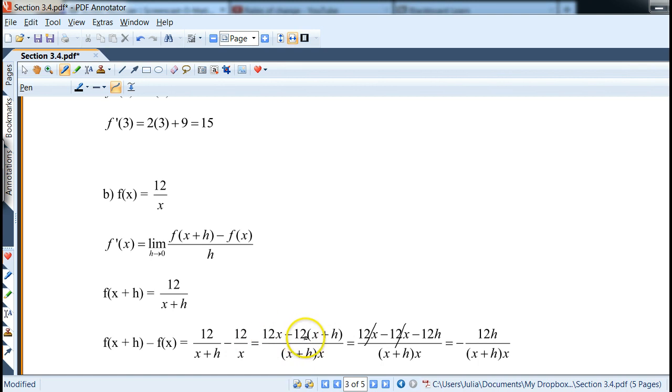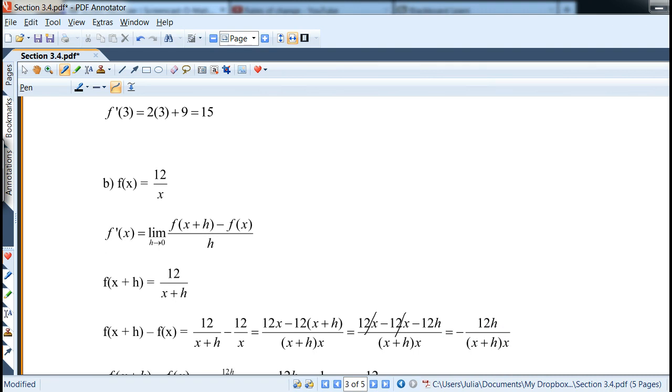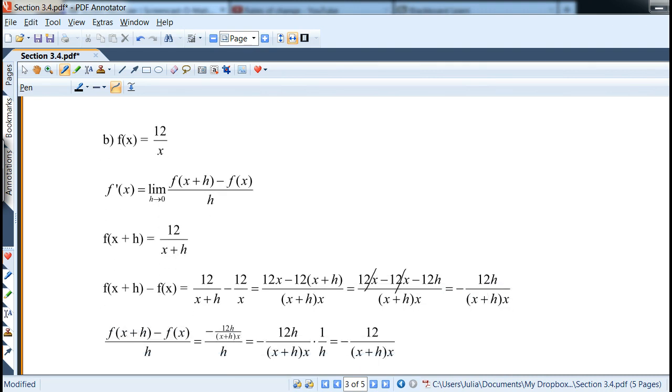And now note how I brought it to common denominator, which is their product. So I sort of like cross multiplying. We'll get 12x minus 12 times x plus h. And now notice how distributing the 12, notice how 12x would cancel. So we end up with negative 12h on the top, which negative can come out. And I kept it as x plus h times x in denominator. I didn't distribute the x, although it's fine if you do distribute it.